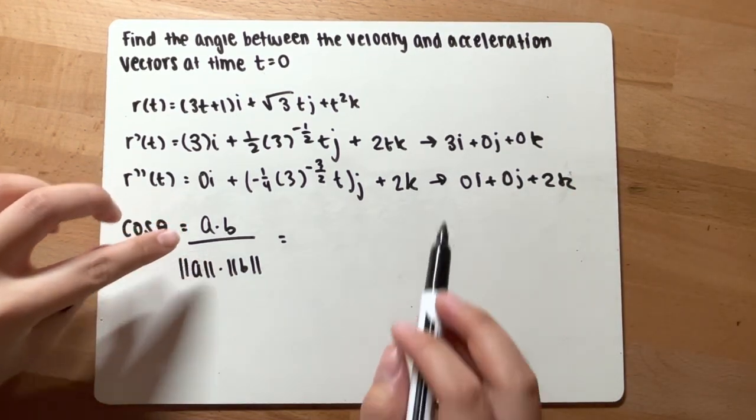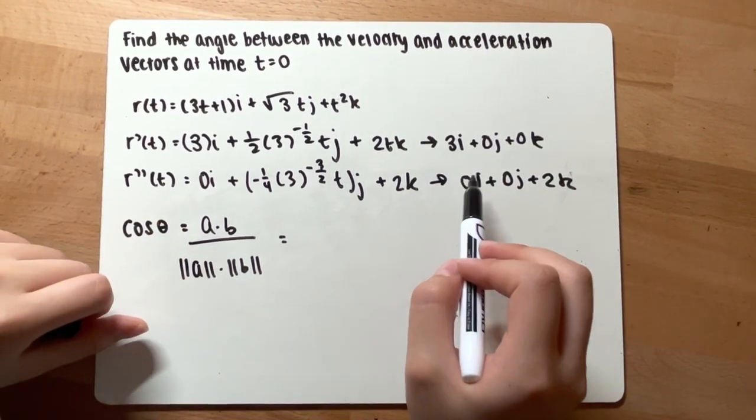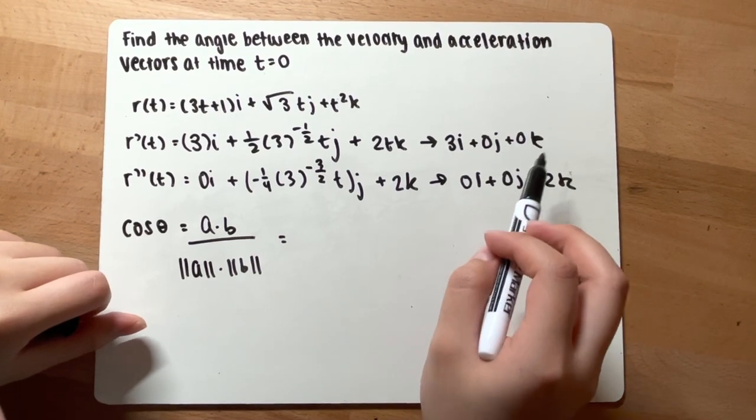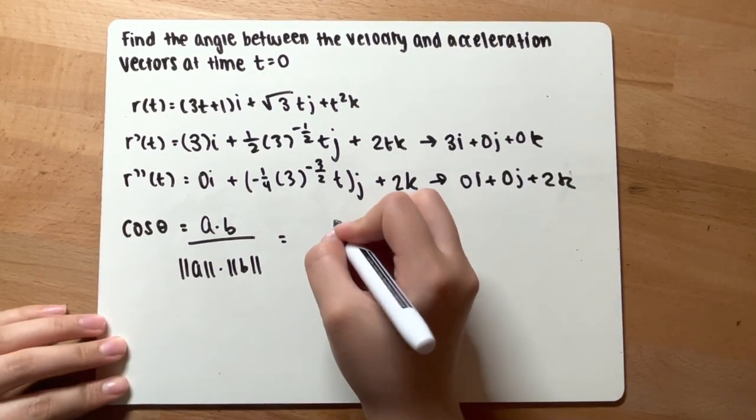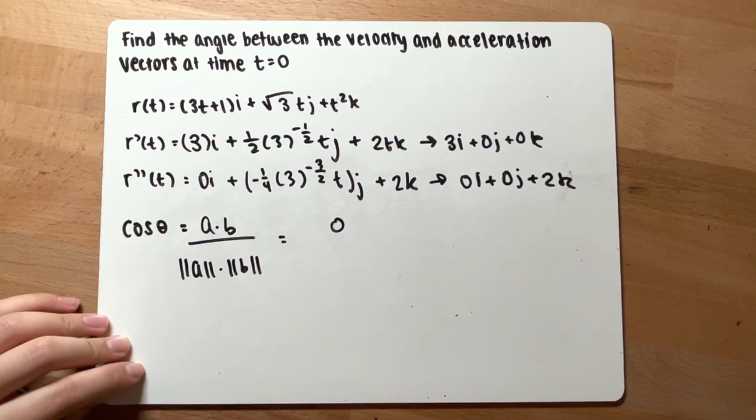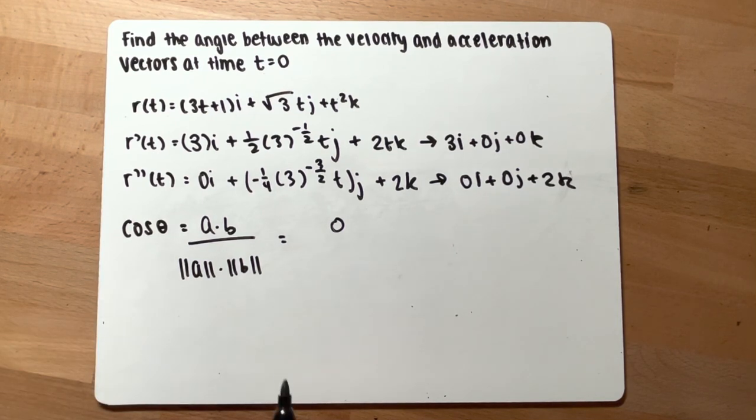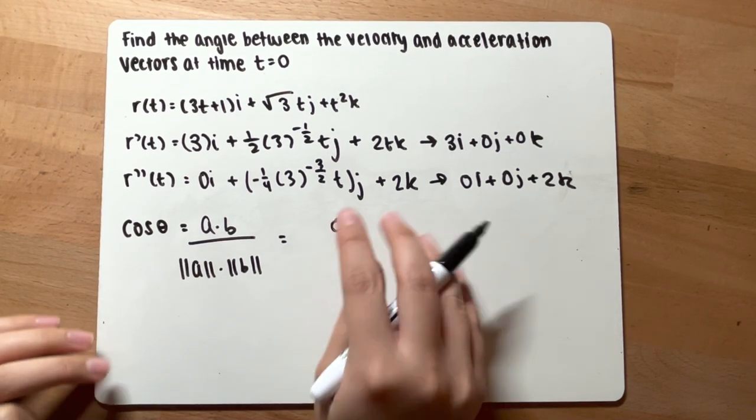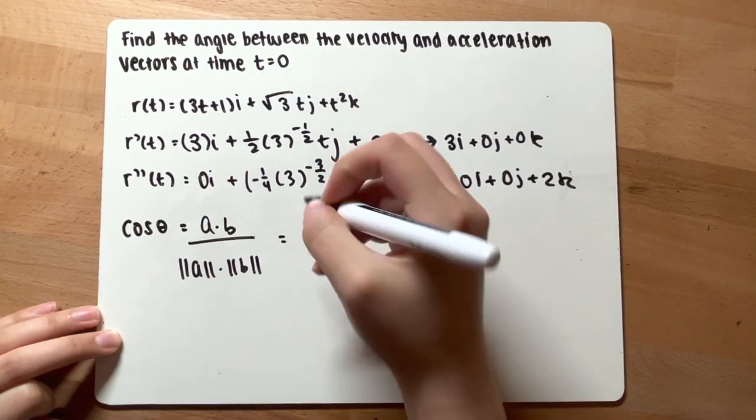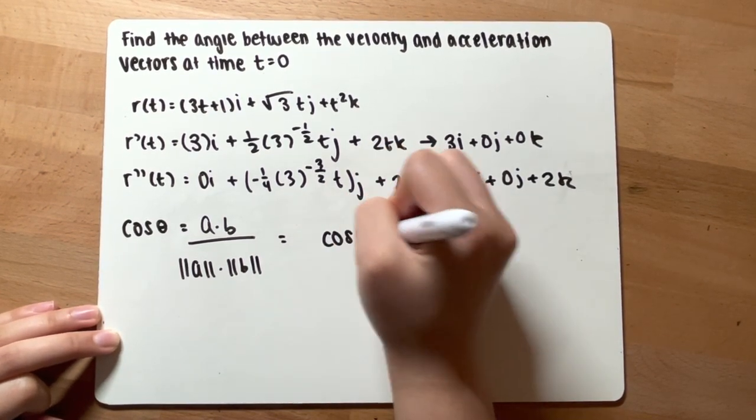When you do the dot product of these, 3 times 0 is 0, 0 times 0 is 0, 0 times 2 is 0. You have 0 in the front. And if there is a 0 in a numerator of a fraction, the fraction is going to equal 0. So cosine theta equals 0.